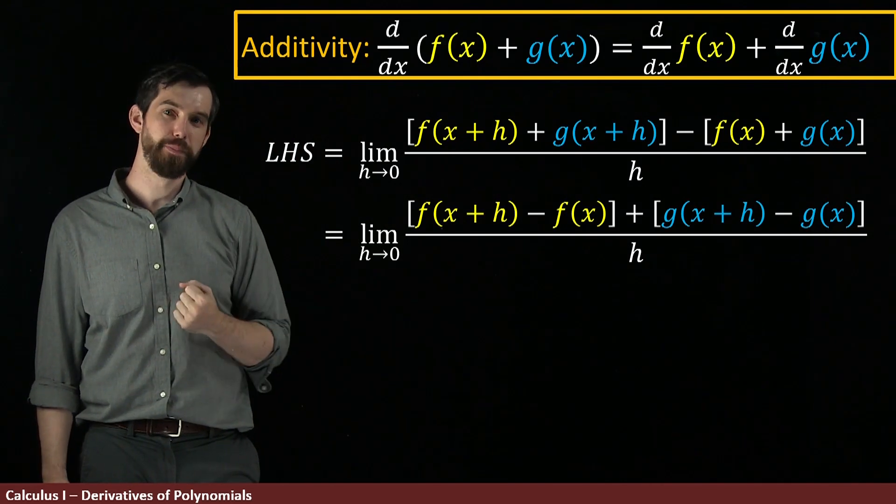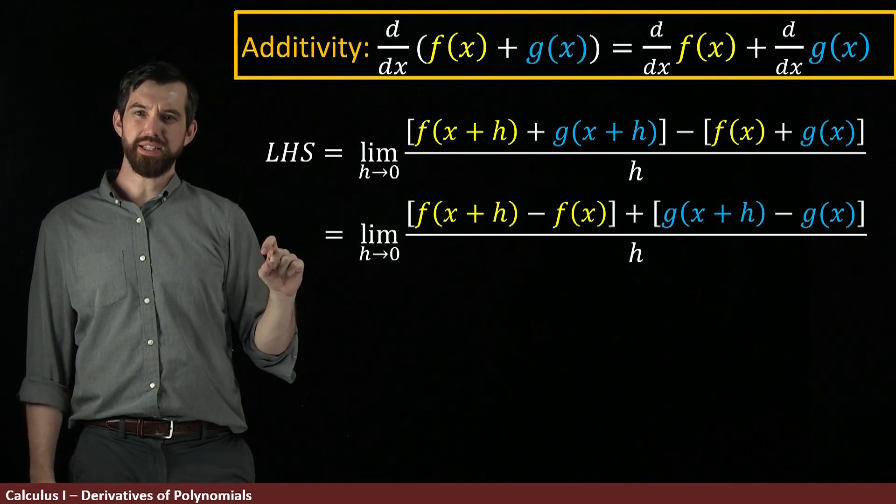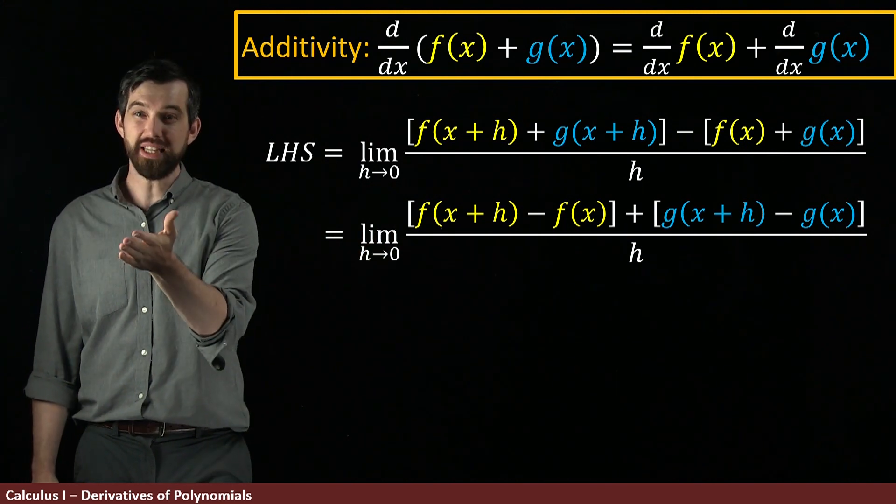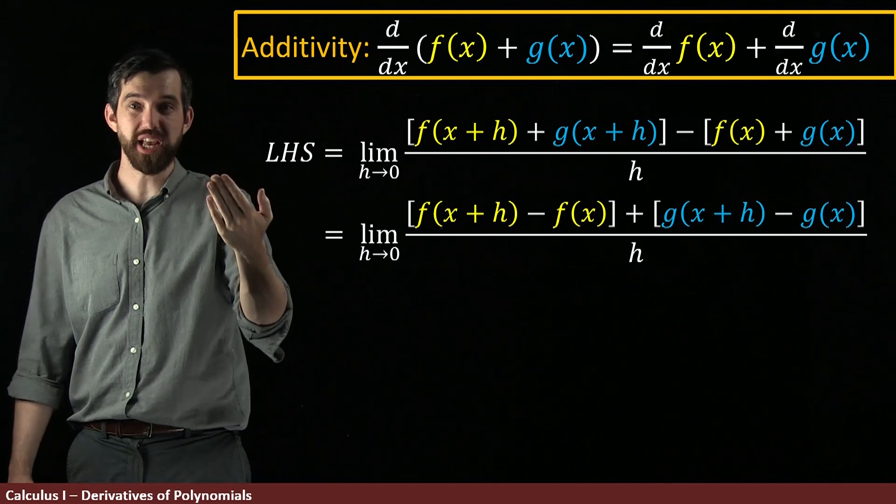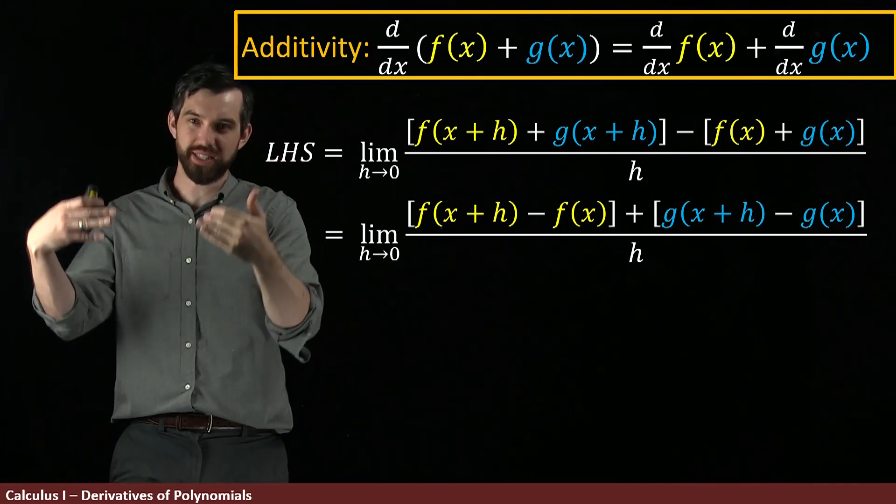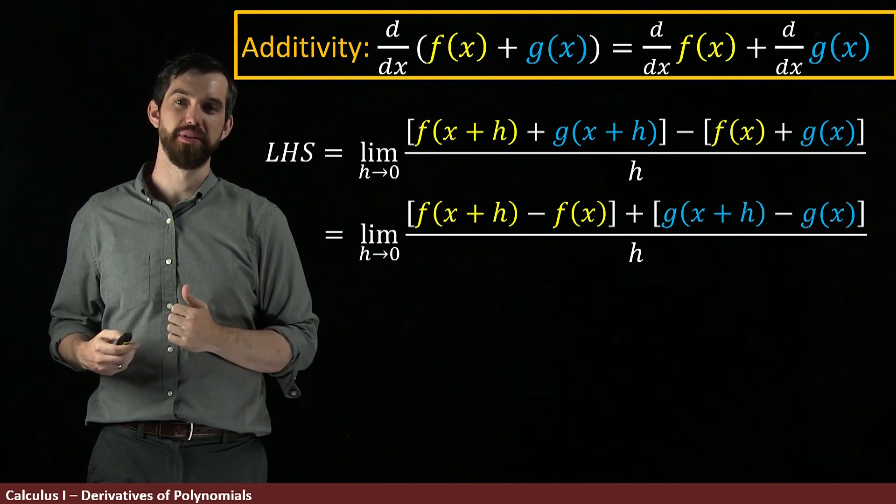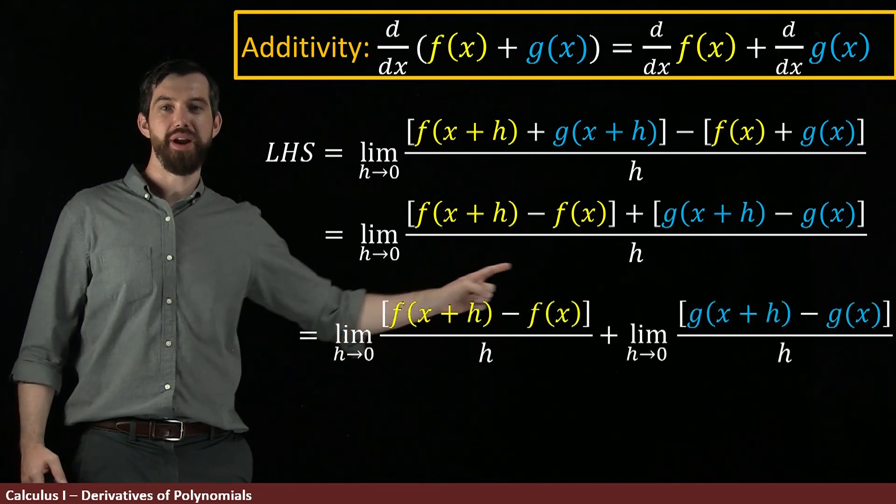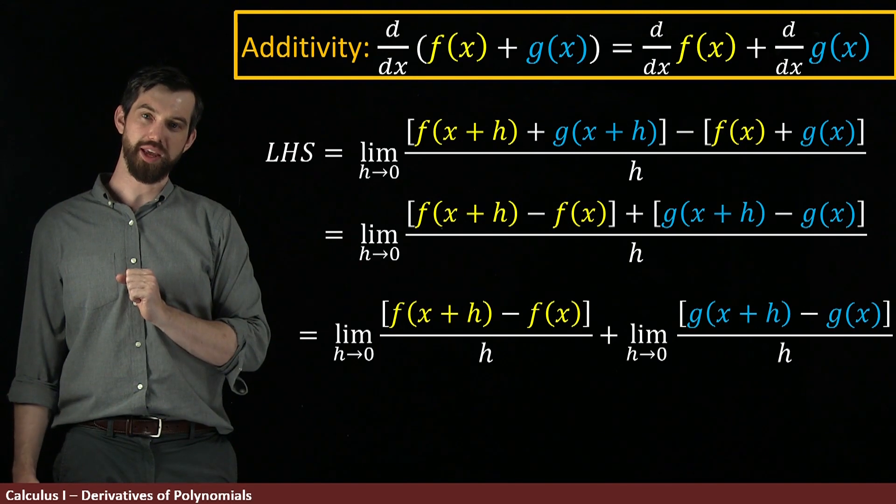Now, what can I do? Notice that this is the limit of a sum. And we've previously had a rule for the limit of a sum: The limit of a sum is the sum of two different limits. So, what I can do is take this, and I can break it up here as the sum of two different things.